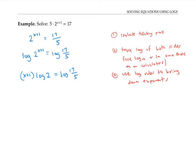But I still need to solve for x. Right now x is trapped in the parentheses, so I'm going to free it from the parentheses by distributing. So I get x·log 2 + log 2 = log(17/5). Now I will try to isolate x by moving all my terms with x in them to one side and all my terms without x in them to the other side.